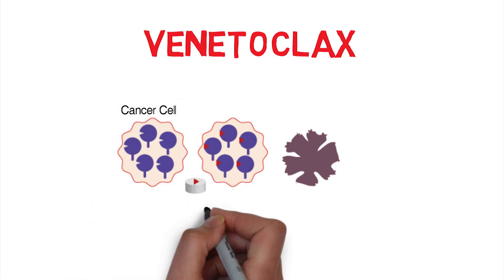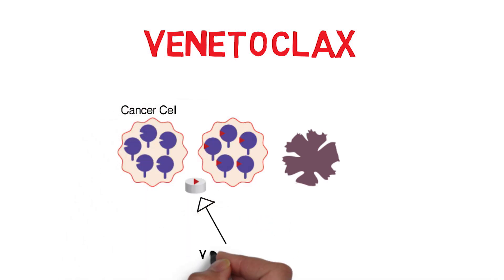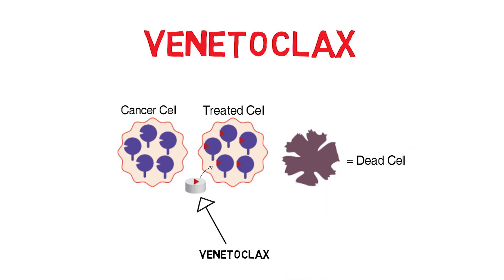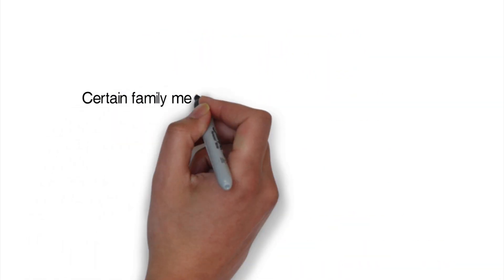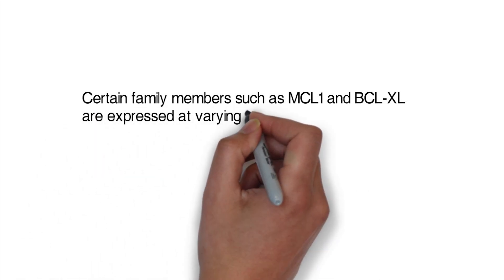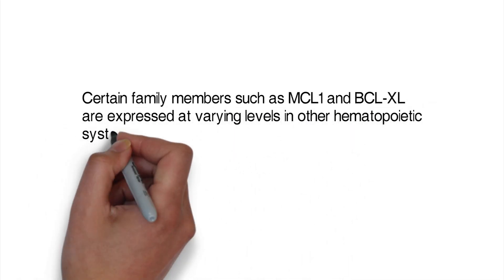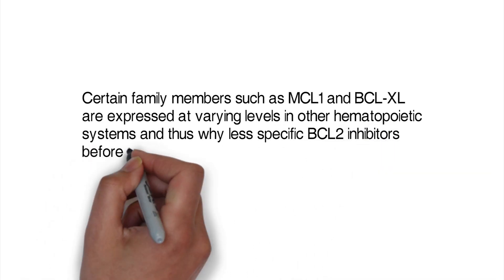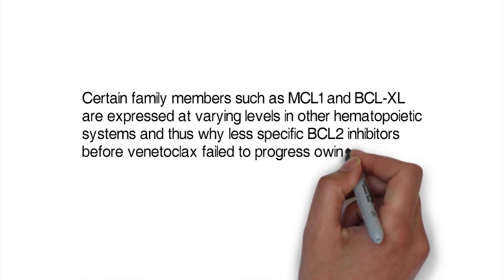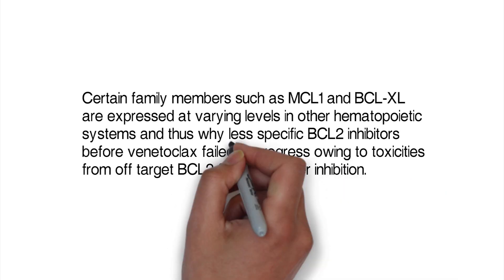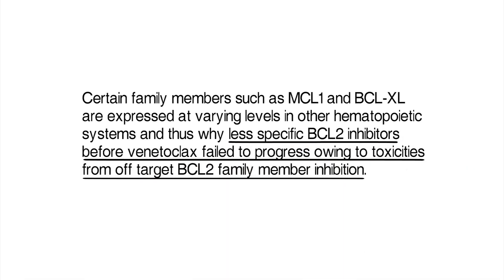Drugs such as venetoclax primarily inhibit BCL2 and help restore the cell's ability to undergo apoptosis. Certain family members such as MCL1 and BCLXL are expressed at varying levels in other hematopoietic systems, which is why less specific BCL2 inhibitors before venetoclax failed to progress, owing to toxicities from off-target BCL2 family member inhibition.